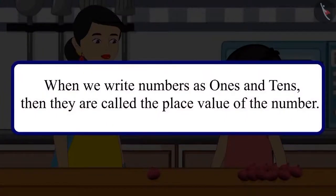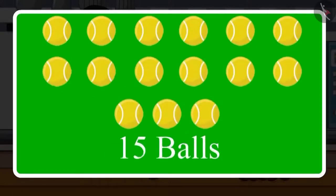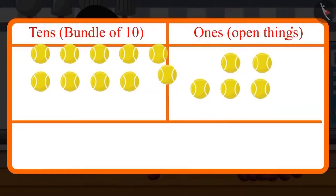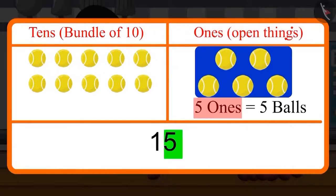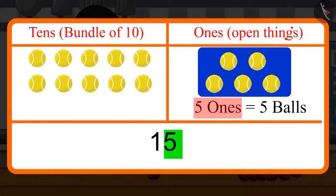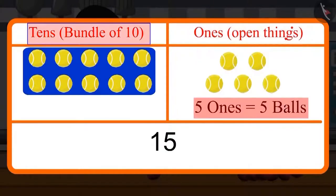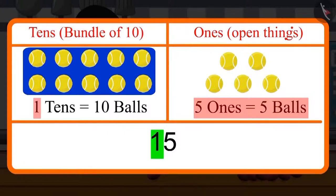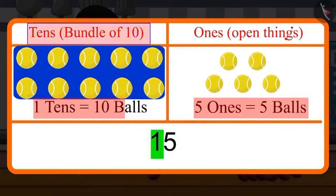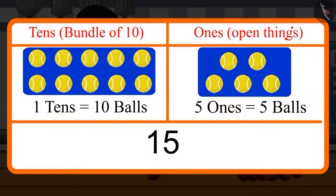So, children, do you know that when we write numbers in ones and tens, then we call them the place value of the numbers? For example, if I have 15 balls with me, then in this 15, the place value of 5 is 5 ones, which means 5 balls. And the place value of 1 is tens, which means 10 balls. So, the total is 15 balls.